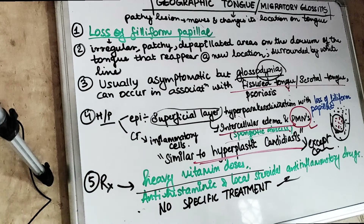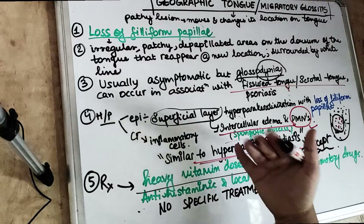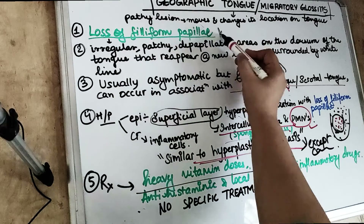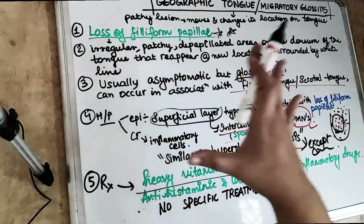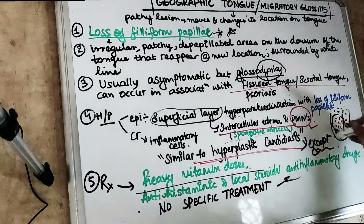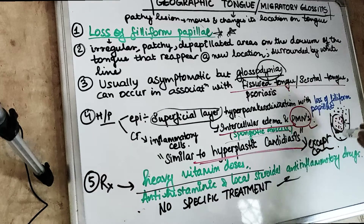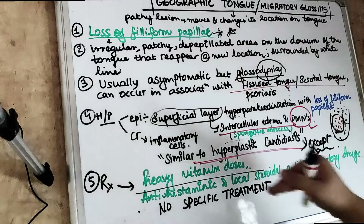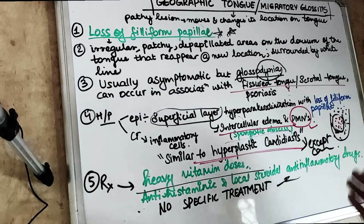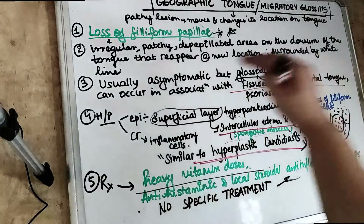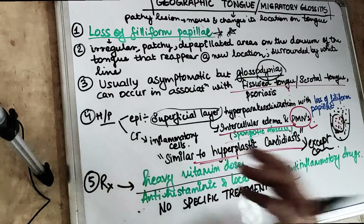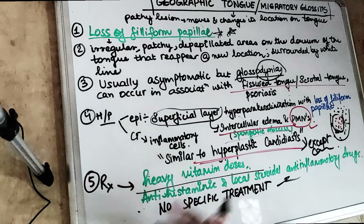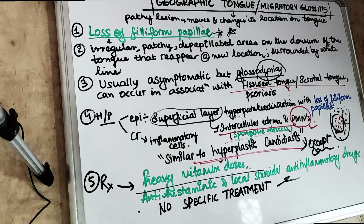To summarize: geographic tongue or migratory glossitis is characterized by the absence of filiform papillae in specific patches. Because of that, the patch contains only red fungiform papillae, while the rest of the tongue retains white filiform papillae, giving the appearance of a white demarcation around the red patch. The location keeps changing and the condition is usually asymptomatic.